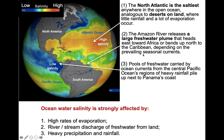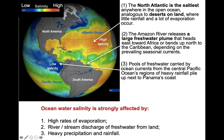Ocean water salinity is strongly affected by high rates of evaporation, river stream discharge of fresh water from land, and heavy precipitation and rainfall. Looking at the Atlantic Ocean here, the salinity bar shows that dark blue colors indicate extremely low salt content, while warm colors, particularly red, indicate high salinity. The North Atlantic is the saltiest anywhere in the global ocean system.